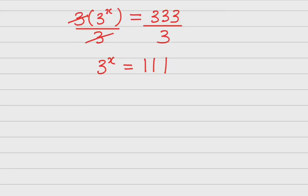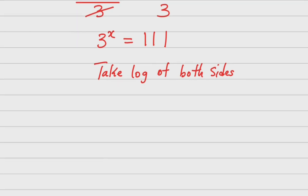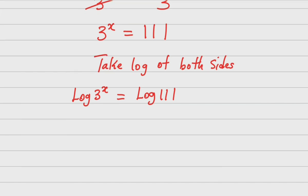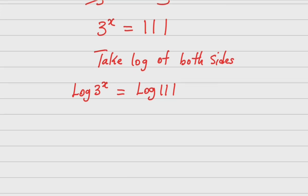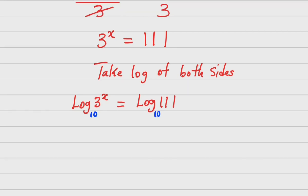To find x, I will take the log of both sides. What does that mean? I will have log 3^x equals log of 111. Remember the bases are 10 — take note of that, though it doesn't really matter, but let me just write it.